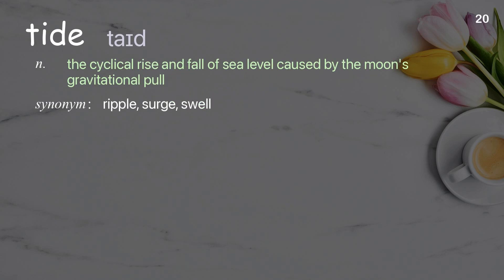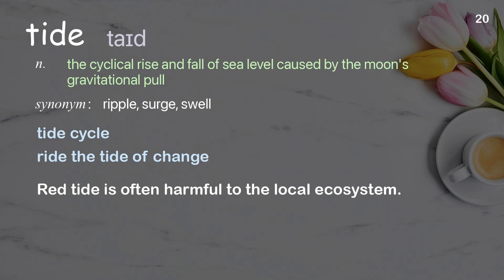Tide: The cyclical rise and fall of sea level caused by the moon's gravitational pull. Examples: Tide cycle. Ride the tide of change. Red tide is often harmful to the local ecosystem.